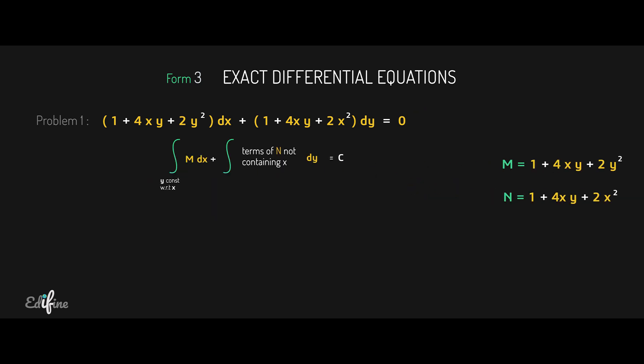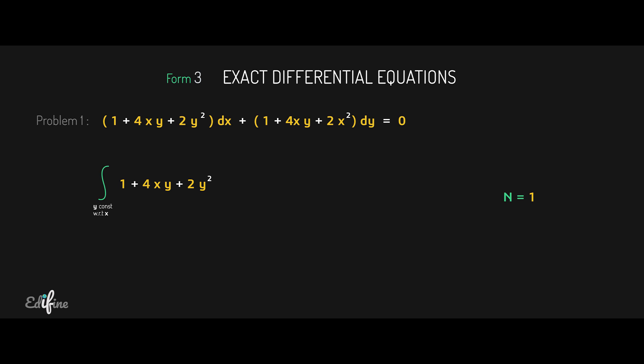The solution can be obtained as follows: integral (keeping y constant) of M dx + integral of the terms of N not containing x, dy, equals z. Here M = 1 + 4xy + 2y². In N, which has three terms — 1, 4xy, and 2x² — only the term 1 does not contain x. So the solution is written as: integral (keeping y constant) of (1 + 4xy + 2y²) dx + integral of 1 dy = z.